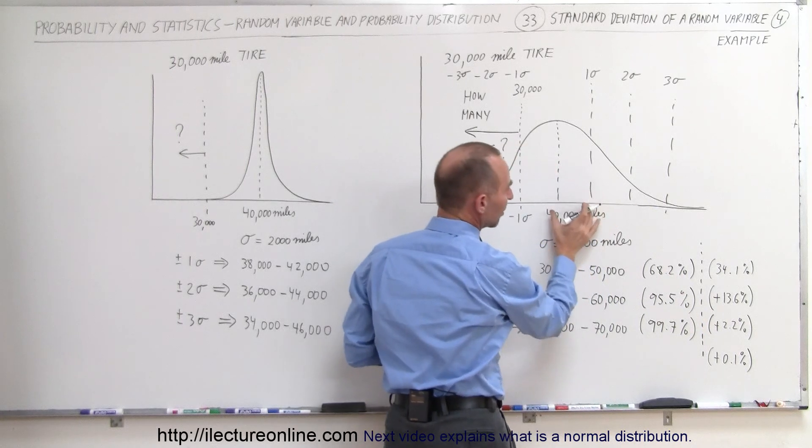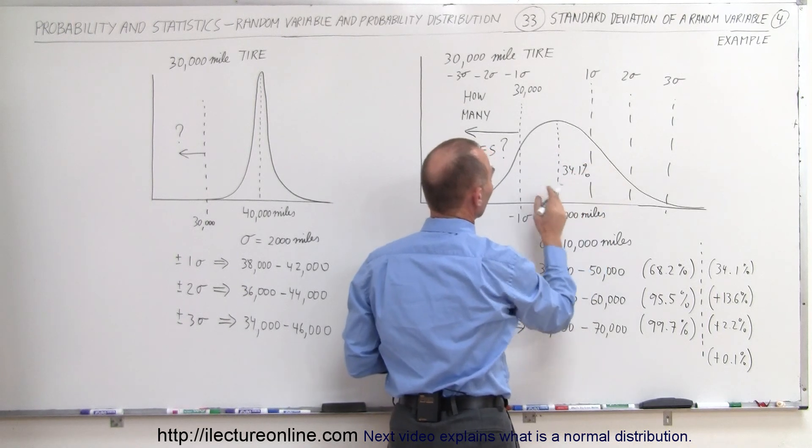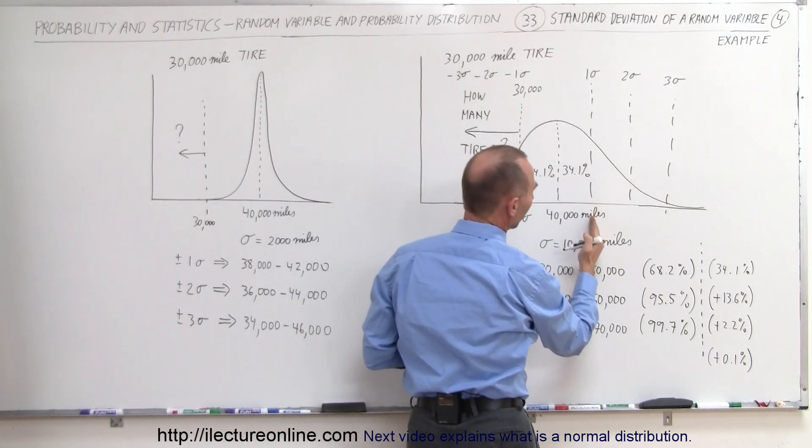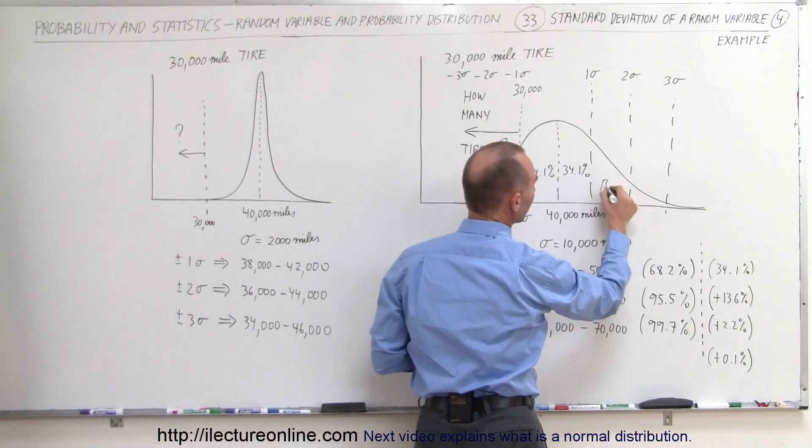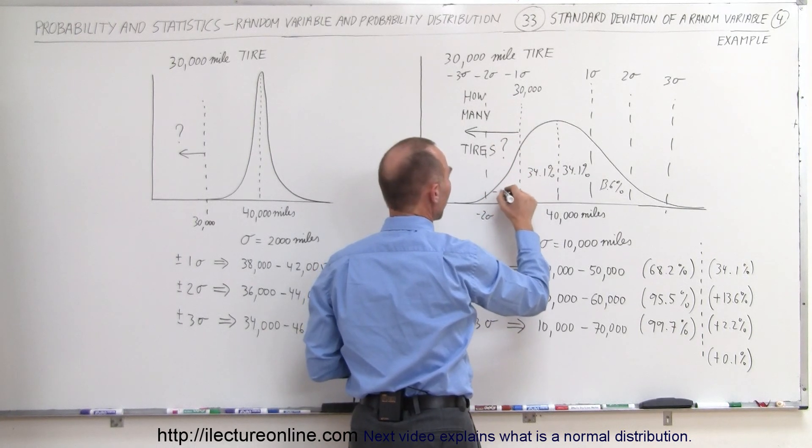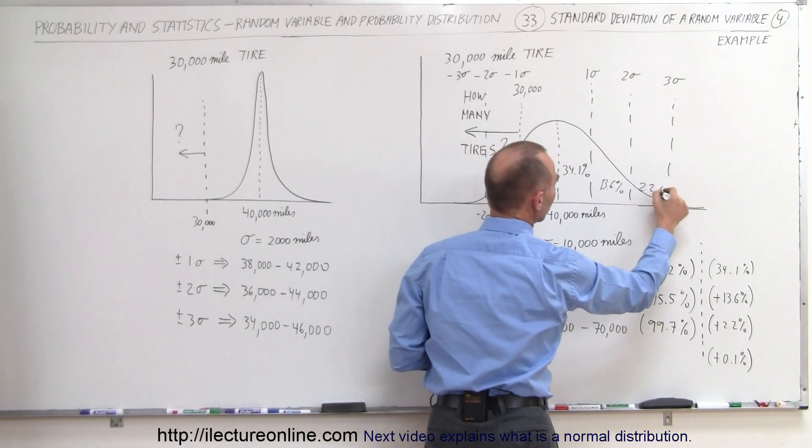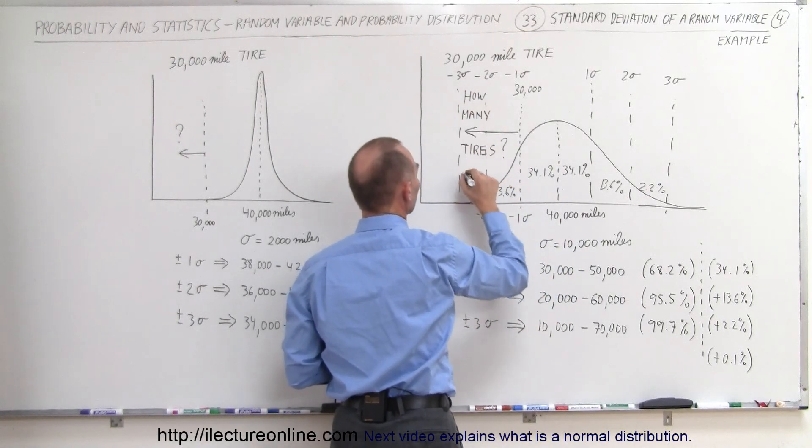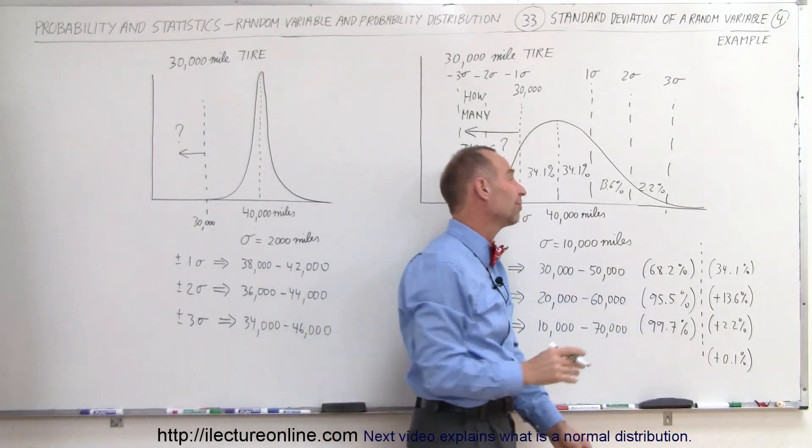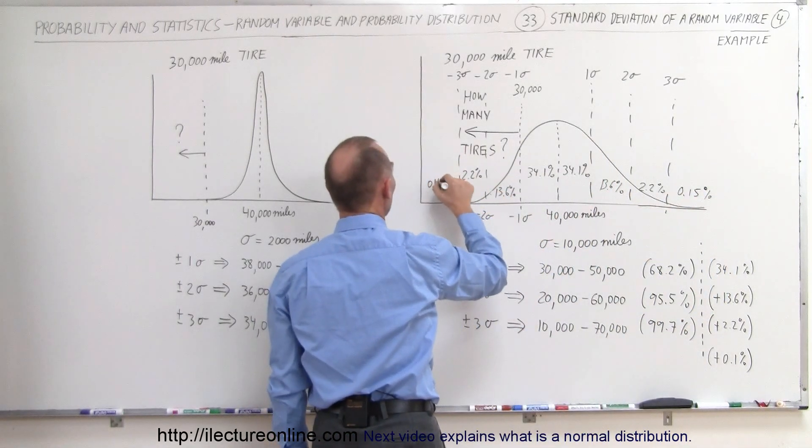Notice that the amount of tires that will go from the average to plus one sigma is 34.1% and from average to minus one sigma is 34.1%. The amount of tires that will last from plus one sigma to plus two sigma is 13.6% and from minus one to minus two sigma would also be 13.6%. And the amount of tires that last from two to three sigma is 2.2% and here that would be also 2.2%. And then anything beyond that, beyond plus or minus three sigma is only about 0.15%, 0.15% which is almost negligible.